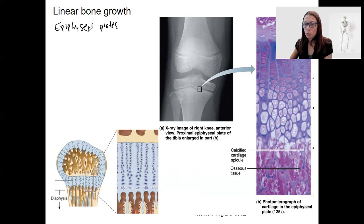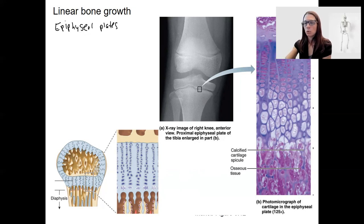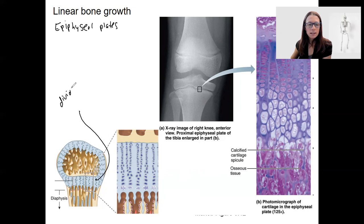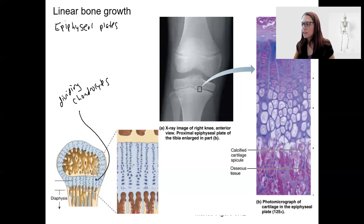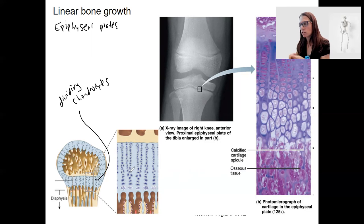This occurs at the growth plates through adolescence. Once linear growth is done, these plates are now called epiphyseal lines, where they are no longer active. The epiphyseal plates are different because they actually contain dividing chondrocytes — columns of chondrocytes that are continually growing and causing the bone to grow. So it's an active plate, and long bone growth occurs as long as that plate is active.